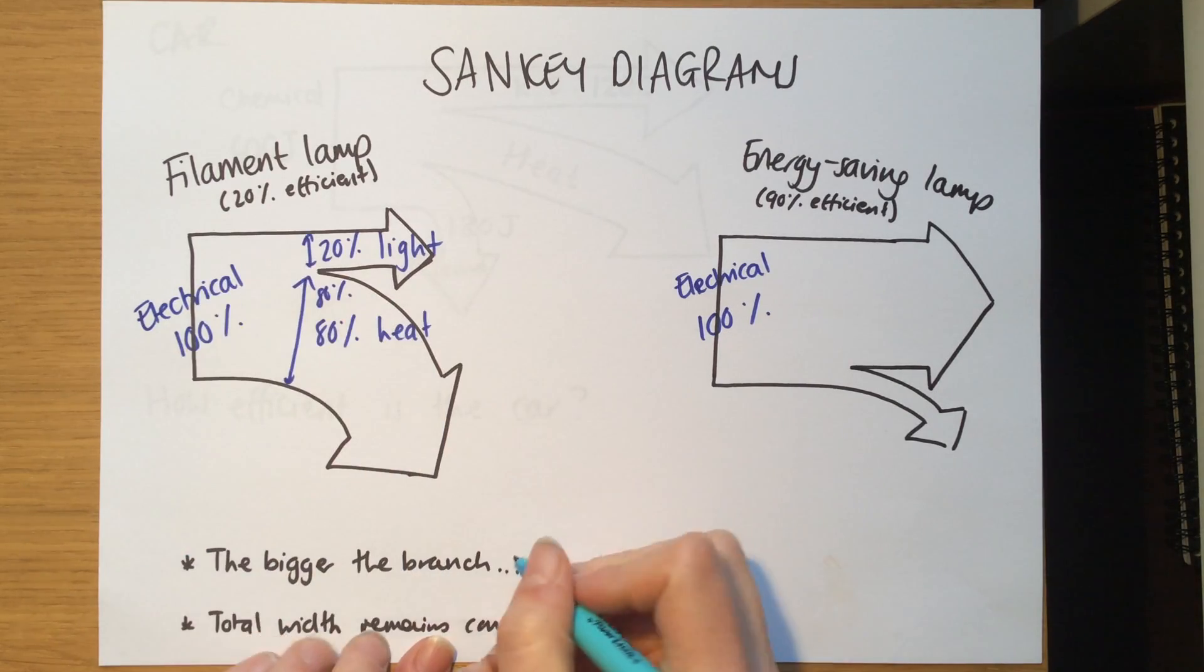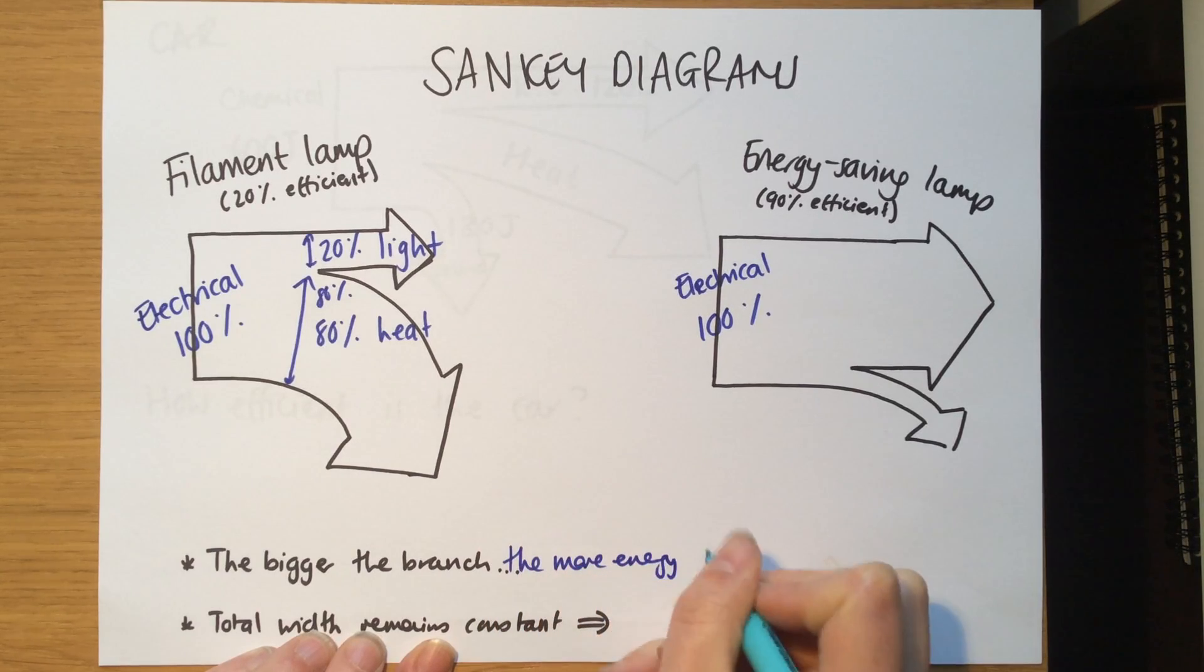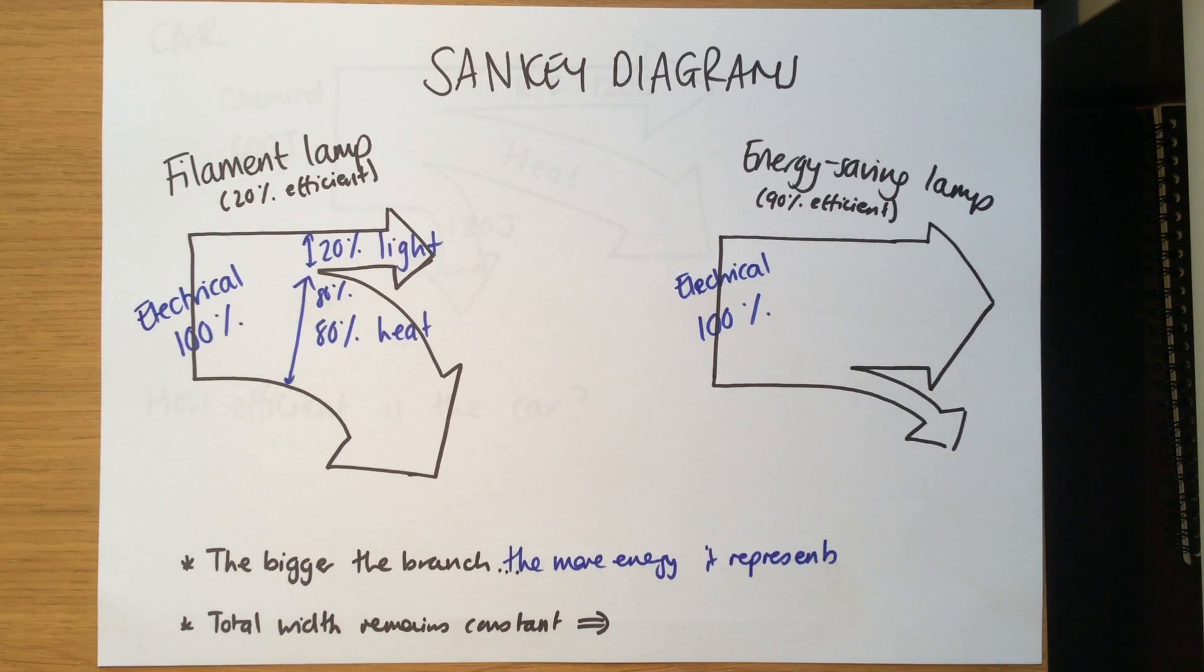The size of the branch shows you proportionally how much energy is being used. I've got a rule down here: the bigger the branch, the more energy it represents. It should be done quite carefully, so normally in an exam you get given a grid to draw this on so you can count squares and make sure that area is completely right.